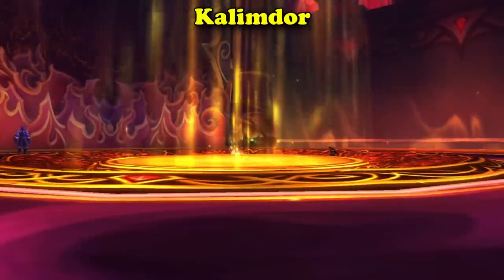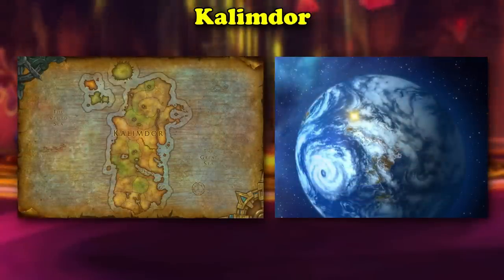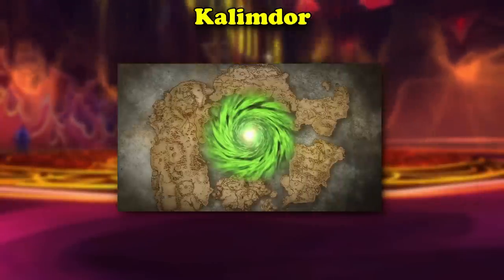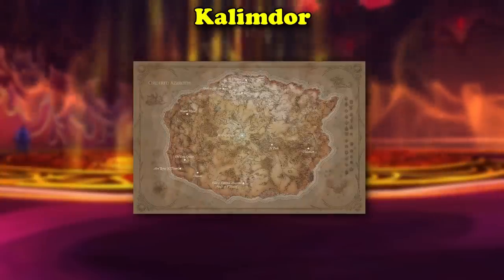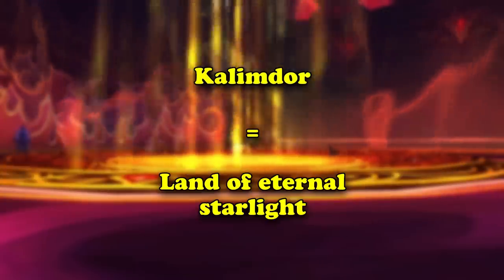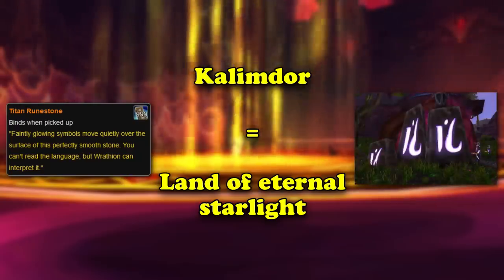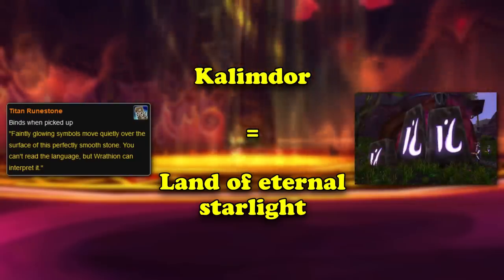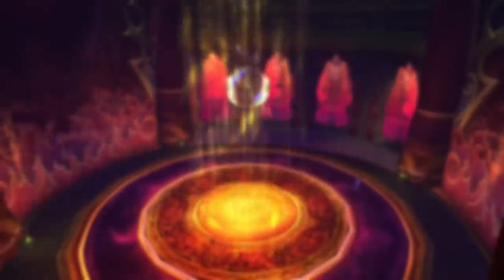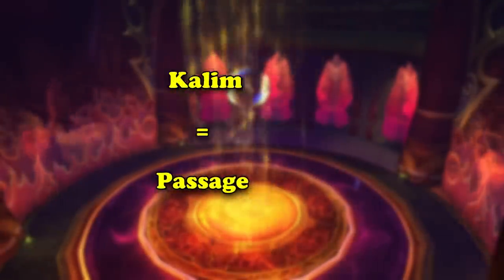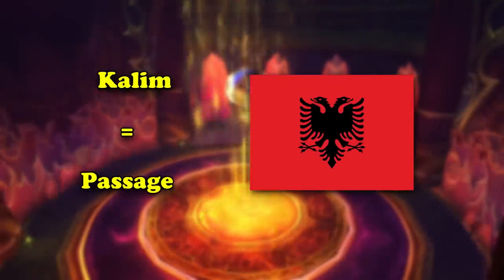Our next word is Kalimdor, which in-game currently refers to the westernmost known continent of Azeroth. However, before the Sundering, Kalimdor was used to refer to the all-in-one main continent. In WoW's lore, Kalimdor means land of eternal starlight in both the Titan and Darnassian languages. How and why Titans and Titan Watchers decided to name the original continent Kalimdor is still not known. In the real world, Kalim means passage in Albanian, but this is probably more of a coincidence in the etymology for the name.